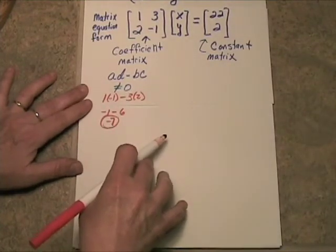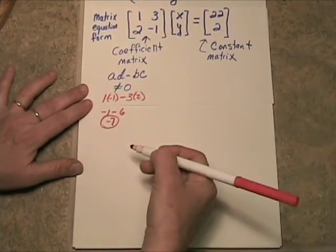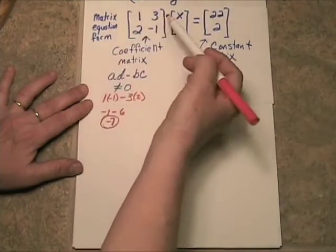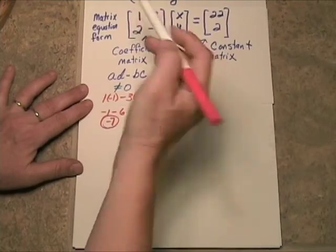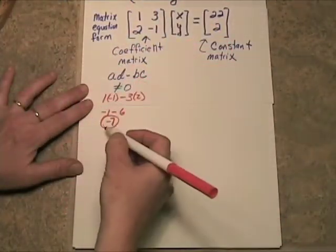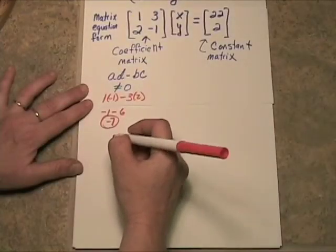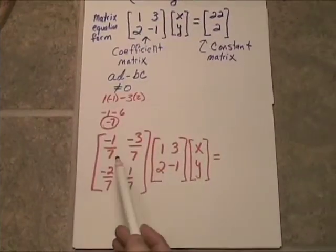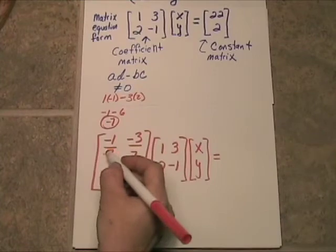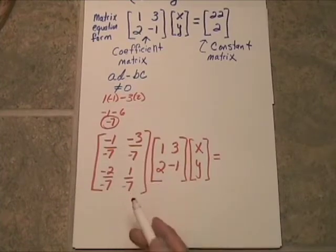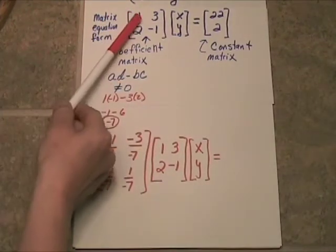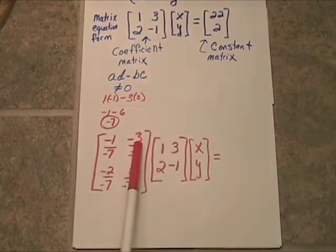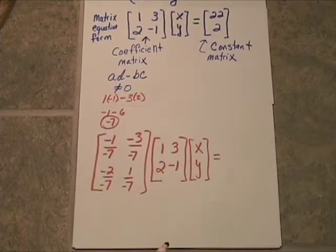Now, the inverse theorem tells us that on a 2 by 2, if we want to create the inverse, all we have to do is switch the A and the D and take the opposites of the B and the C and put each of those on top of the determinant. So let's go ahead and do that. What we're going to have here then is going to look like this. We've got our negative 7s in the denominators here. And notice we have switched the A and the D and we have taken the opposite of the B and the C as per the inverse matrix theorem.